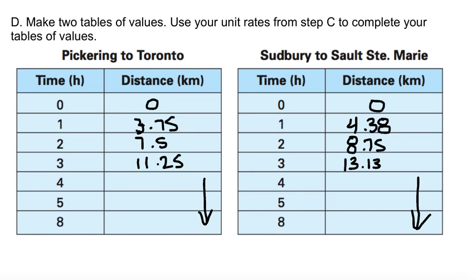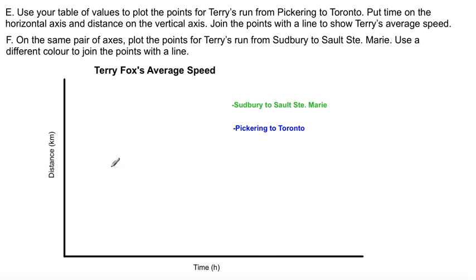Once you complete the tables, use your table of values to plot the points for Terry Fox's run from Pickering to Toronto and from Sudbury to Sault Ste. Marie. Put time on the horizontal axis and distance on the vertical axis, then join the points with a line to show Terry's average speed. For axis scales, you might use 1, 2, 3 on the horizontal and 5, 10, 15 on the vertical.